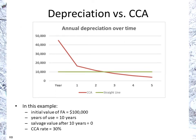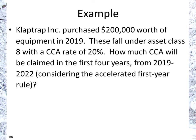Here's an example showing depreciation by the numbers using the accelerated method. Using an initial asset value of $100,000, a CCA rate of 30%, versus straight-line depreciation over 10 years: with straight-line and a salvage value of zero, each year you'd have $10,000 depreciation. With CCA, in year one you'd have $45,000, then it drops below $20,000. Toward the end it falls below $10,000 per year because most depreciation already occurred in the early years.